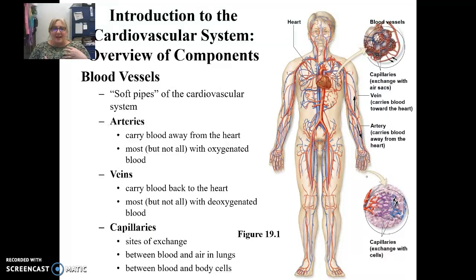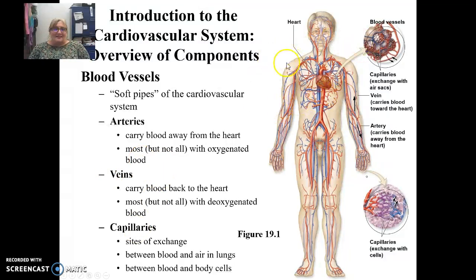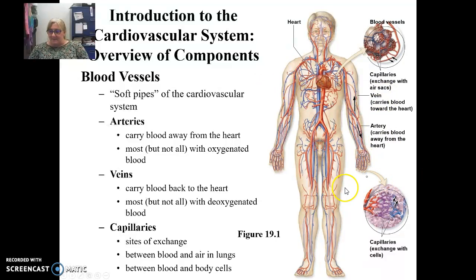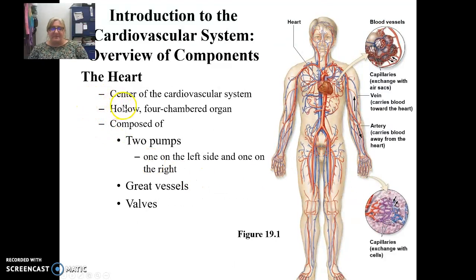In the lungs, carbon dioxide leaves the blood and moves into the alveoli, and then we exhale. Oxygen moves into the blood after we inhale. That's an example of capillary exchange — we'll be talking more about capillary exchange in the next chapter. The heart is the center — the hub where all the roadways either exit or lead back.